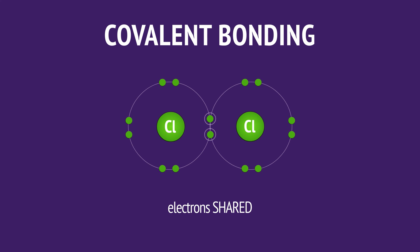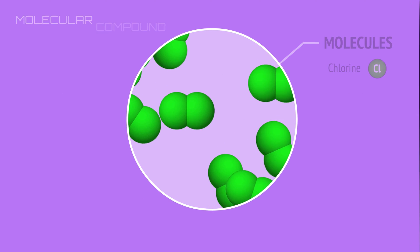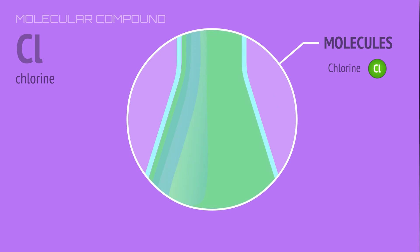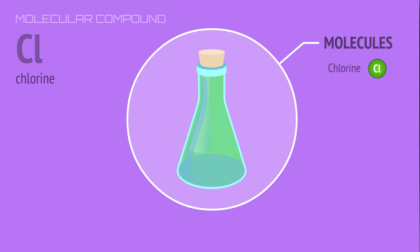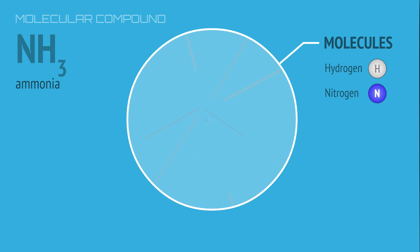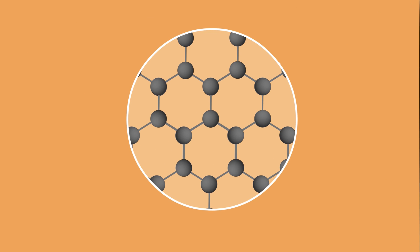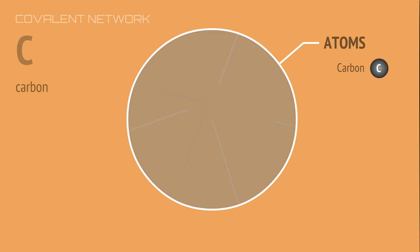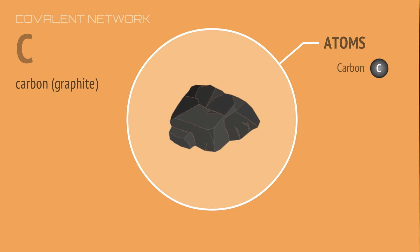Covalent bonding produces molecules, like these chlorine molecules that make up chlorine gas, or these ammonia molecules that make up ammonia gas. Covalent bonding can also produce large repeating structures called covalent networks, like this network of carbon atoms that make up the layers in graphite.